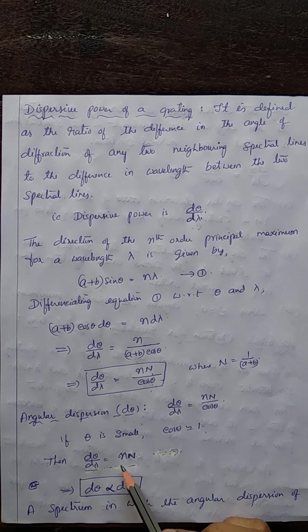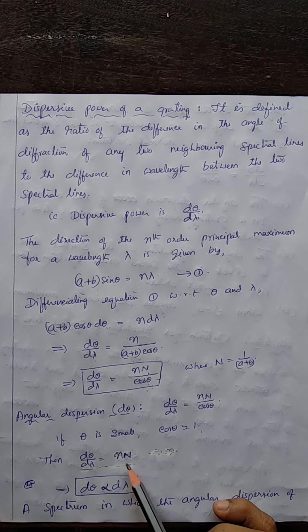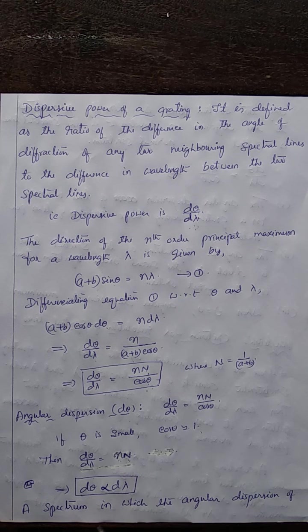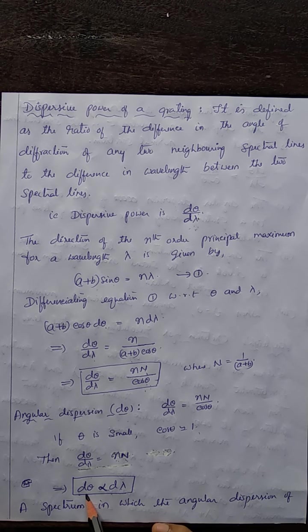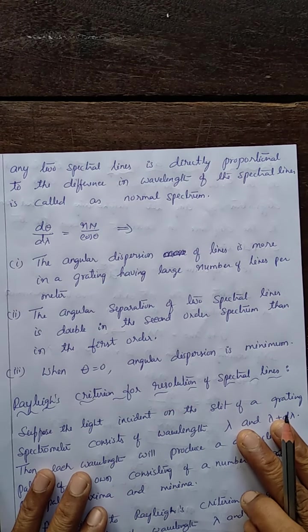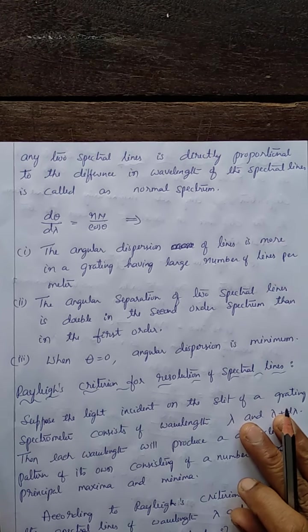Small n is the order of the spectrum or order of the principal maximum; N is the number of lines per meter. Both are constants, so dθ is proportional to dλ. The angular dispersion dθ is directly proportional to the difference in the wavelengths of those two spectral lines. A spectrum having such spectral lines is called a normal spectrum.